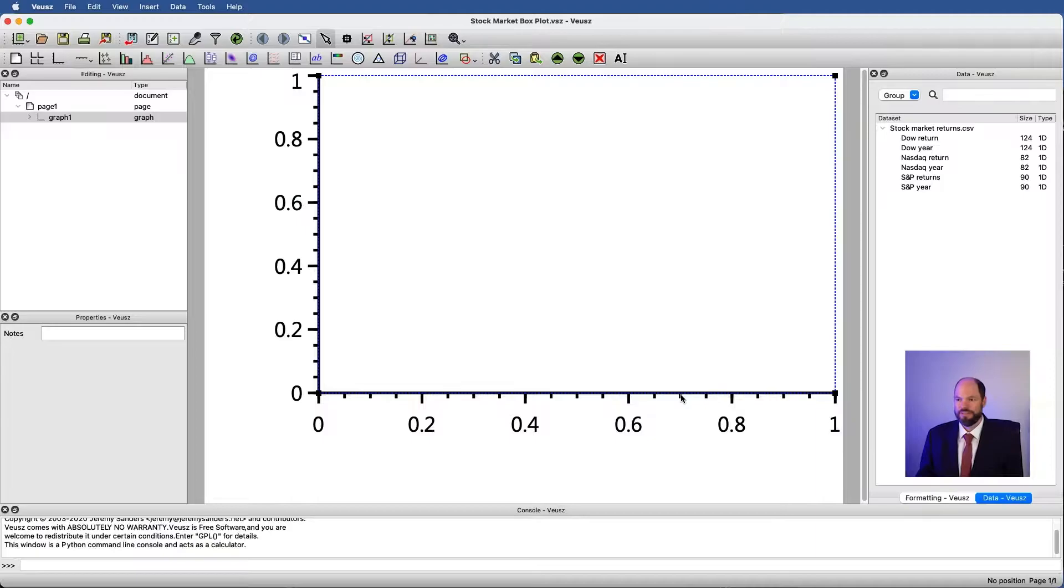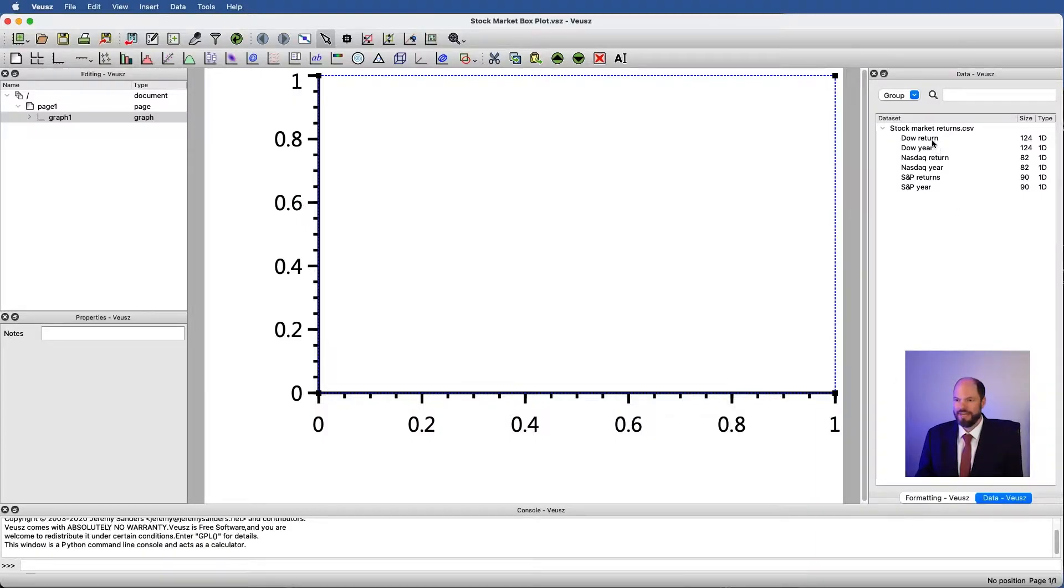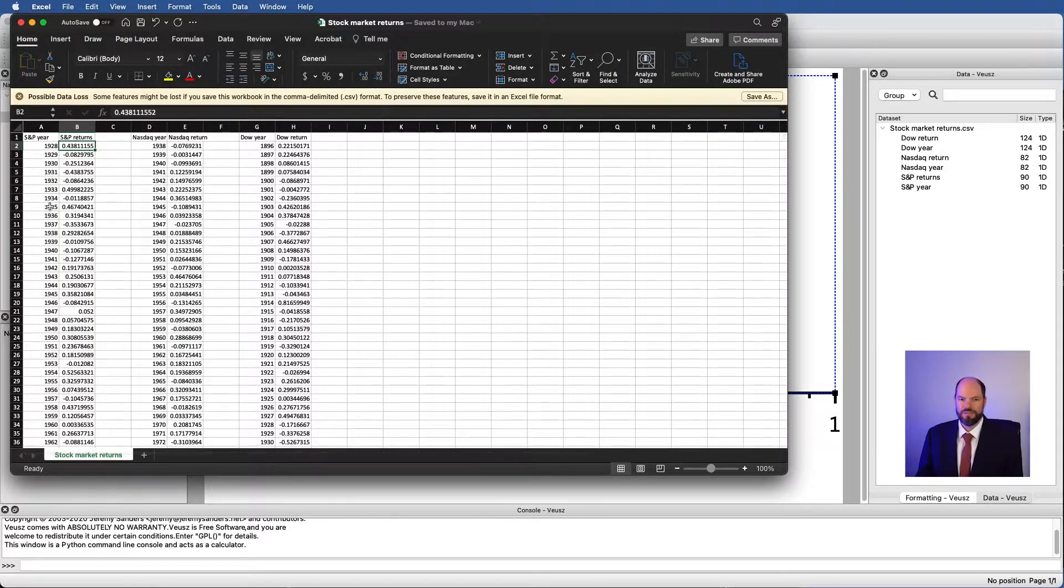I've already opened Views and for the data, we just have Dow return, Dow year, NASDAQ return, NASDAQ year, S&P 500 returns and S&P 500 year. This data is here. I'm looking at the fractional return each year for these three different stock market indices. And actually to make a box plot, we don't need the years at all.